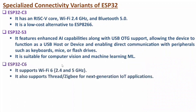The next variant is ESP32 C6. It supports Wi-Fi 6. With Wi-Fi 6, we have dual band connectivity — 2.4 GHz and 5 GHz. It also supports Thread and Zigbee for next generation IoT applications. There are many applications which are based on Zigbee protocol, so ESP32 C6 supports Zigbee and Thread as well as Wi-Fi 6.